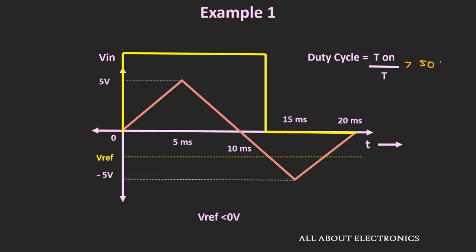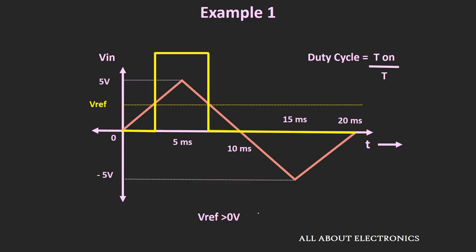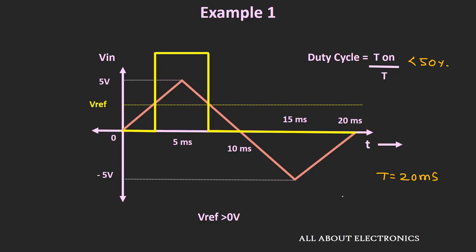If we set some positive reference voltage for this comparator, then the output waveform will show a duty cycle less than 50%. The time period of the triangular wave is 50 ms. To achieve 25% duty cycle, the on-time of the output waveform should be equal to 5 ms — that is one-fourth of the total time period.